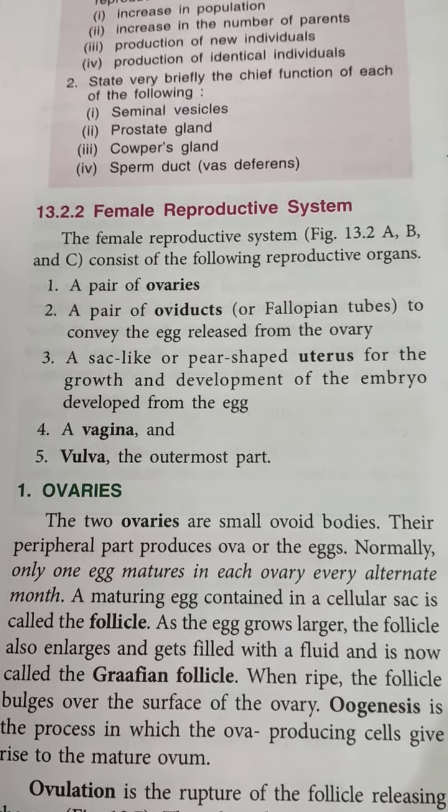Now let me explain the diagrams. All three diagrams are important for labelling. Labelling is very important from this chapter, and all three structures will definitely come in your ICSE exam. As you can see in the first diagram, the fallopian tubes are shown here.